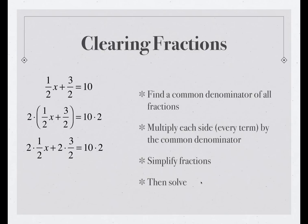2 times 1/2 x plus 2 times 3/2 equals 10 times 2, that's where we are now. And then, 2 times 1/2 is the same thing as 2/2, that's 1. 2 times 3/2 is the same thing as 6/2, that's 3. So this equation can be changed to x + 3 = 20.